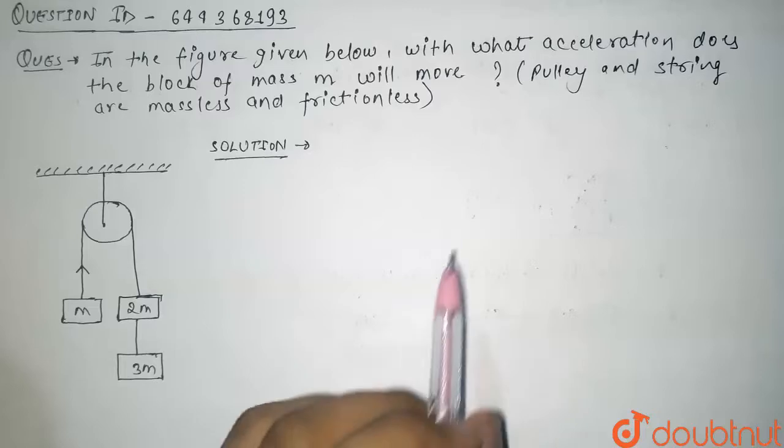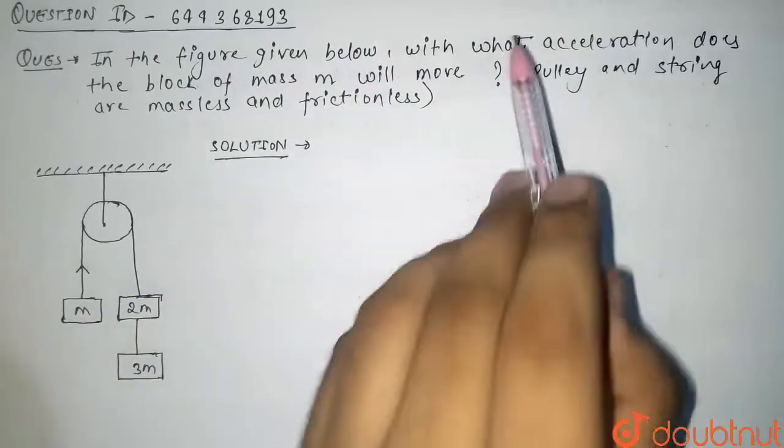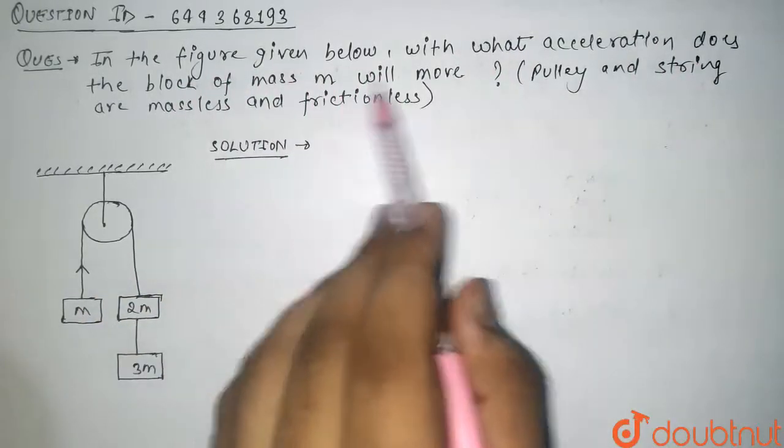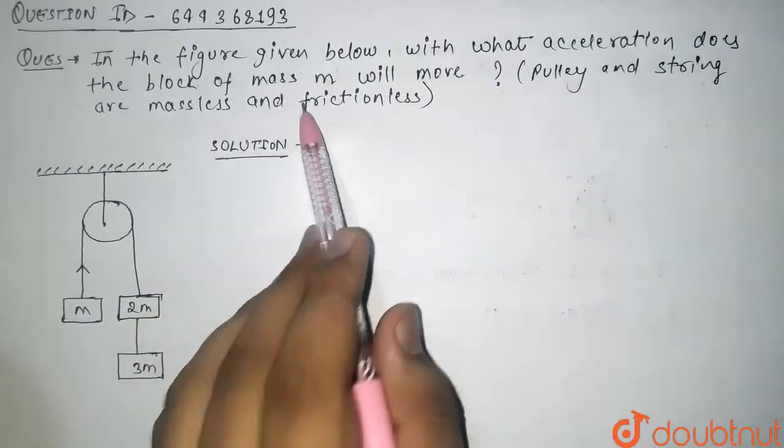Hello guys, so today's question is: in the figure given below, with what acceleration does the block of mass m move? Pulley and string are massless and frictionless.